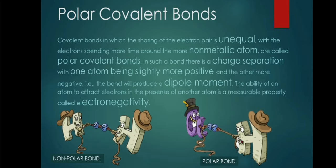Polar covalent bonds are covalent bonds in which the sharing of the electron pair is unequal, with the electrons spending more time around the more non-metallic atom. In such a bond, there is a charge separation, with one atom being slightly more positive and the other more negative. For example, the bond will produce a dipole moment. The ability of an atom to attract electrons in the presence of another atom is a measurable property called electronegativity. That is how a non-polar bond and a polar bond look like. When you say polar bond, they are polar bonded, and the non-polar is they are not bonded on their poles.